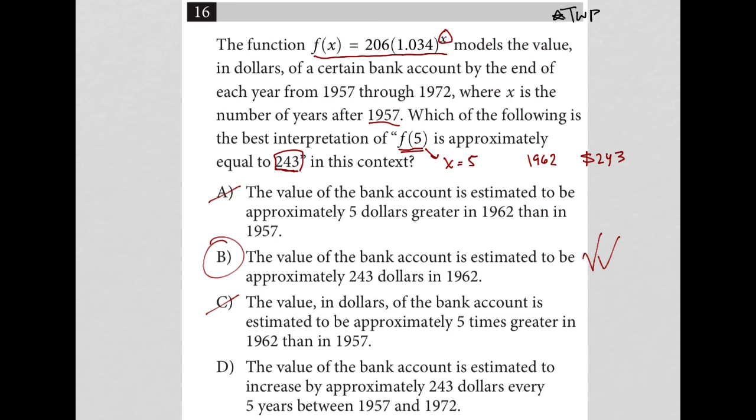Choice D, the value of the bank account is estimated to increase by approximately $243 every five years. That's not true. Just the five years between 1957 and 1972, it's not even an increase of $243, it's a balance of $243. So D is completely gone as well.